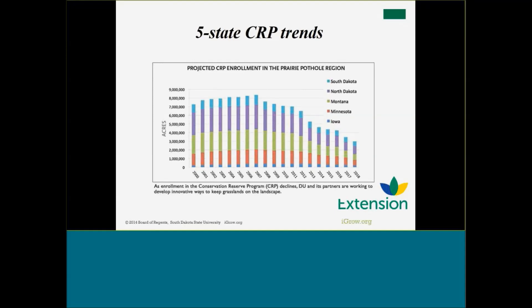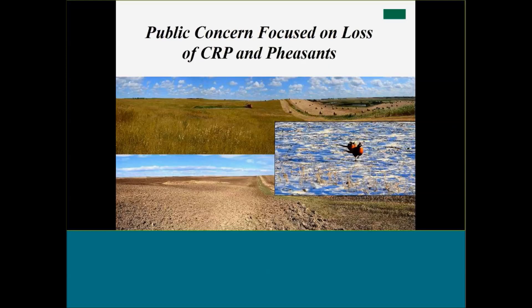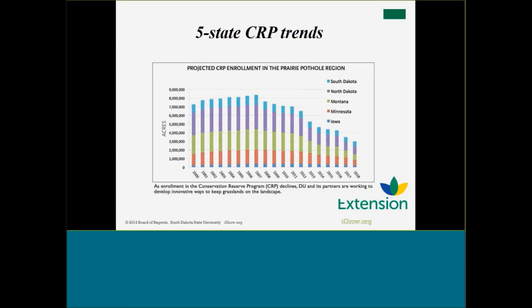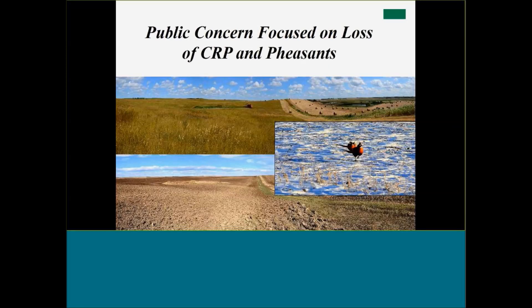These land reports also utilized other public data such as CRP trends, which are addressed fairly regularly across all those reports. We can see not only known data from 2002 to 2014, but projections through 2018, which gives us an idea of land cover across the board. For the general public, the concern has been the loss of grasslands — and a lot of that focused on loss of CRP and then loss of recreational opportunity by way of hunting.